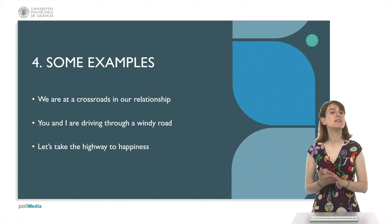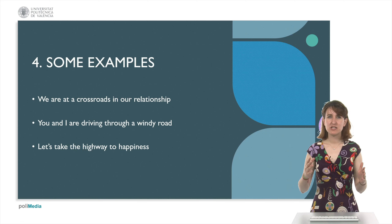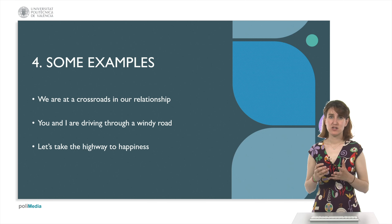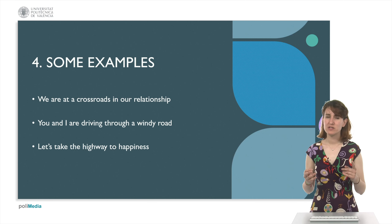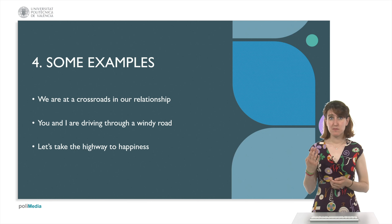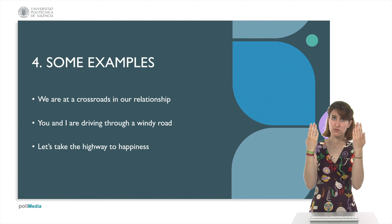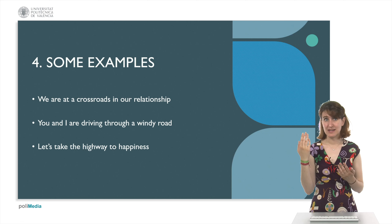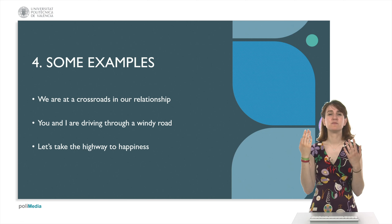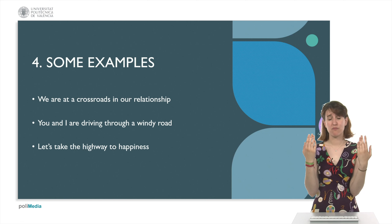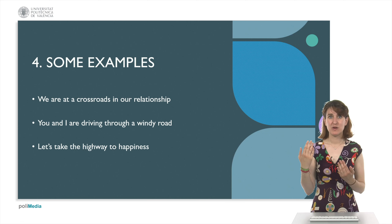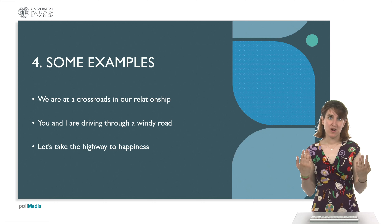And finally, the third example: 'let's take the highway to happiness.' Highway meaning a wide road that's very easy to drive on, and to happiness — the goal — is the destination, which is happiness. So, in the first case, the relationship is explained in terms of the crossroads. In the second one, something in life, an episode in life, is being spoken about in terms of a windy road. And finally, our goals — happiness — are spoken to as a destination that you reach by driving on a highway.